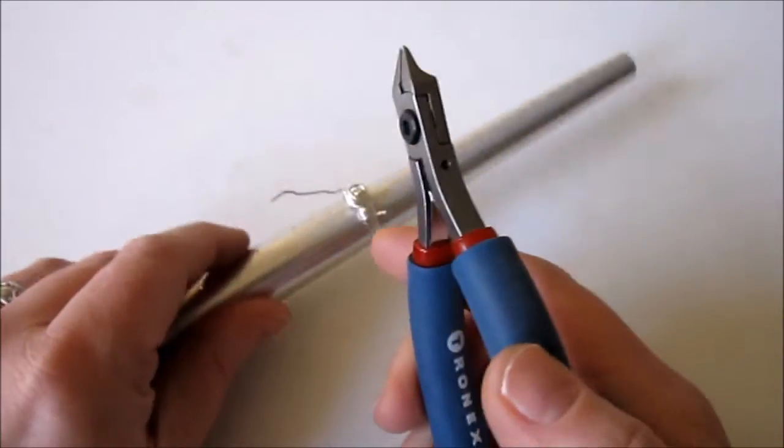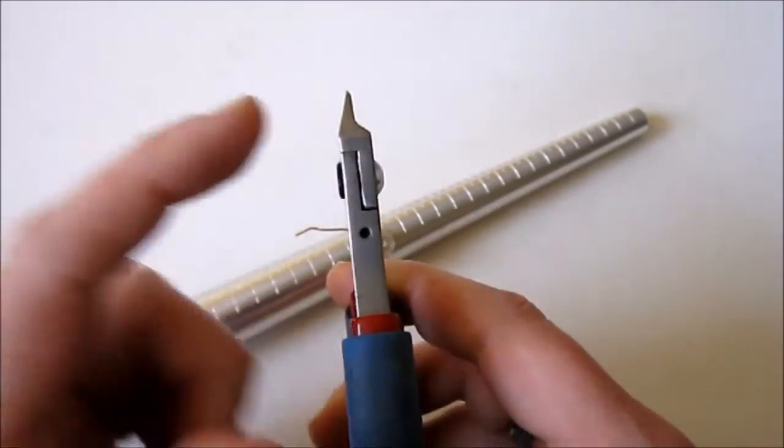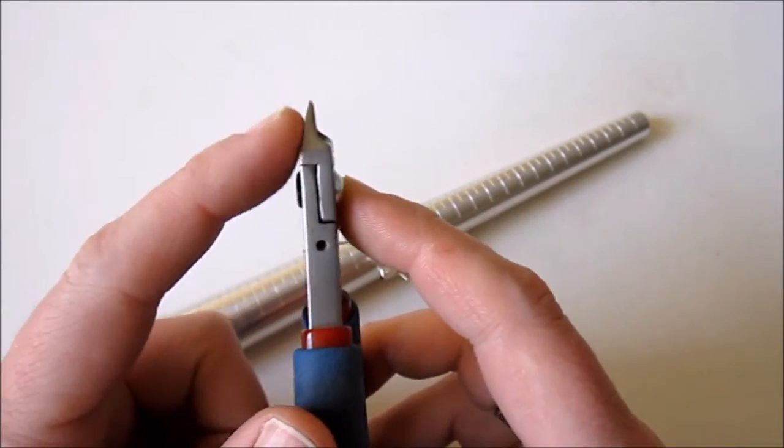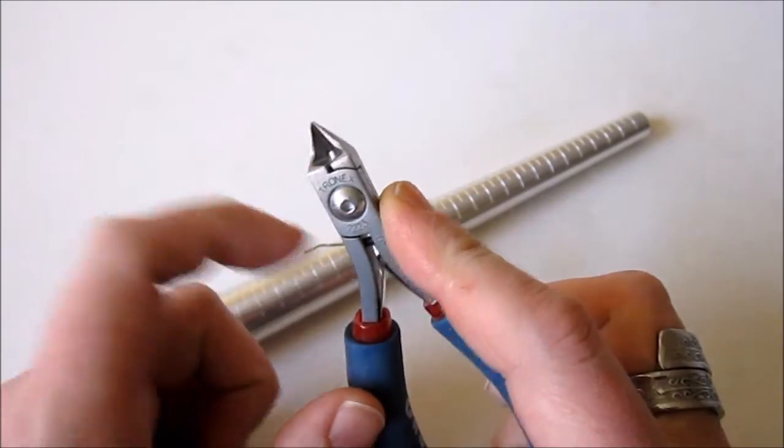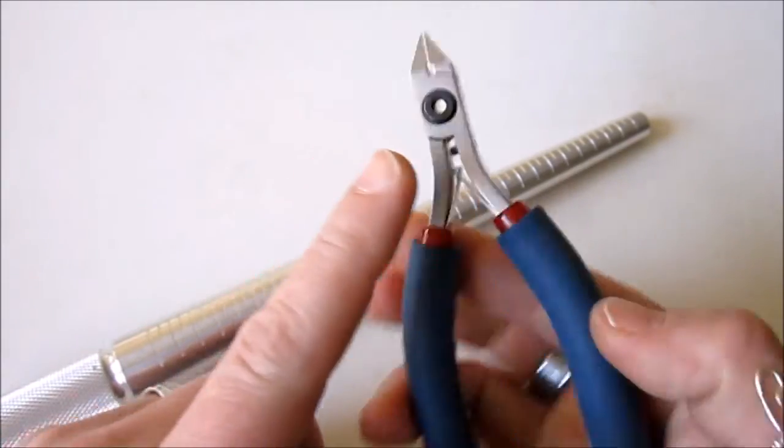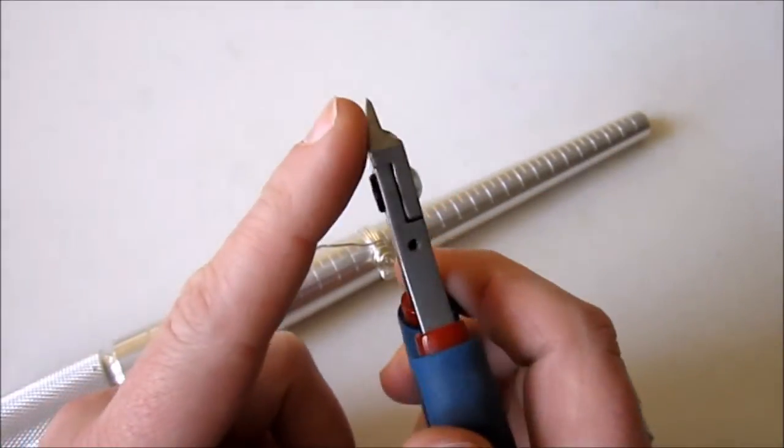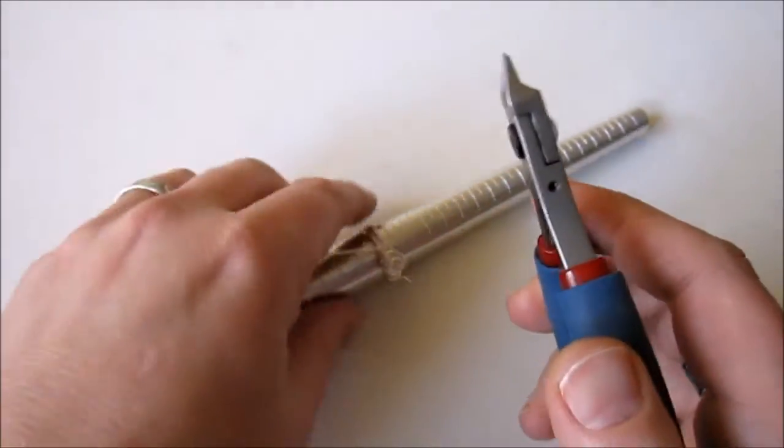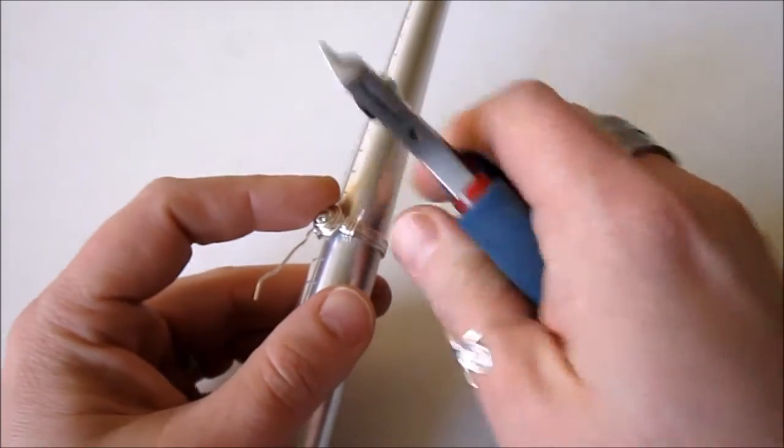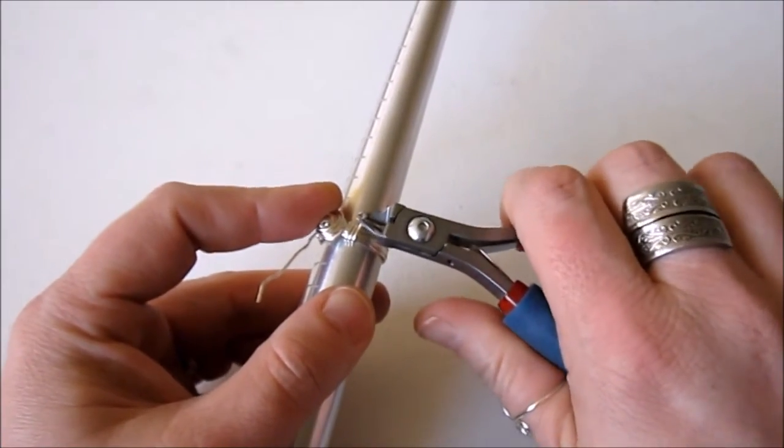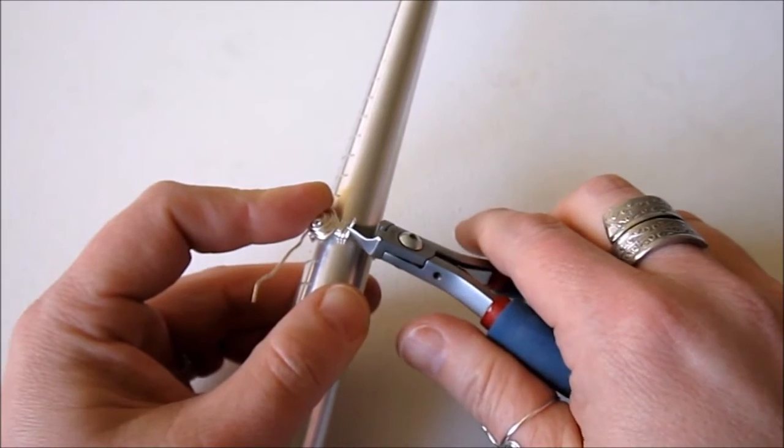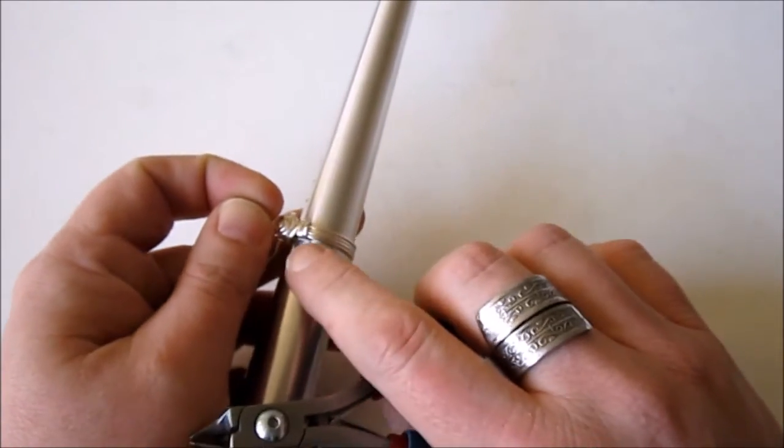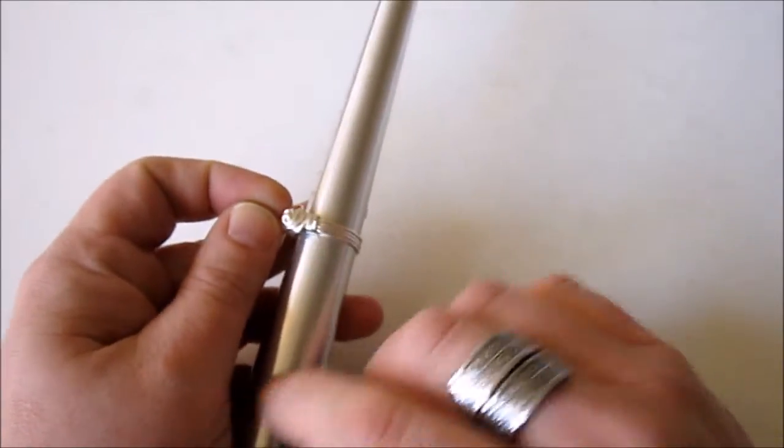And you want to do a flush cut. So if you don't know what that is, and you have your wire cutters, there's two sides. There's a flat side, there's a concave side. I always kind of think of this as the front, this is the back. And you want to use the flat side toward what you're cutting, and that will make a nice flush cut. So sometimes you have to pull this just up a little bit, and especially if you're using 18 gauge wire. Because the wire is really thick.